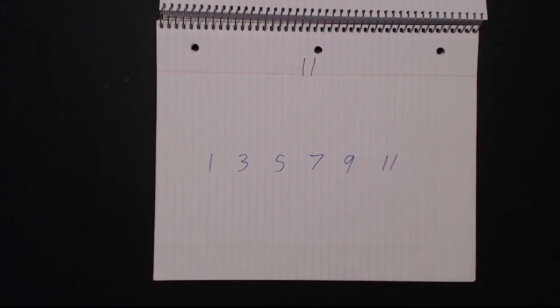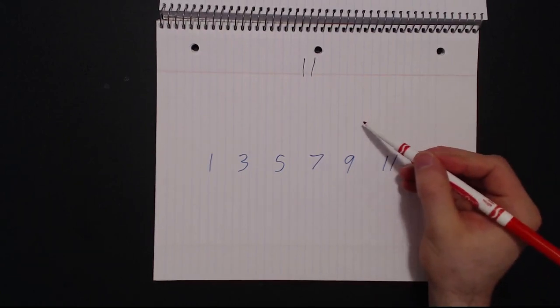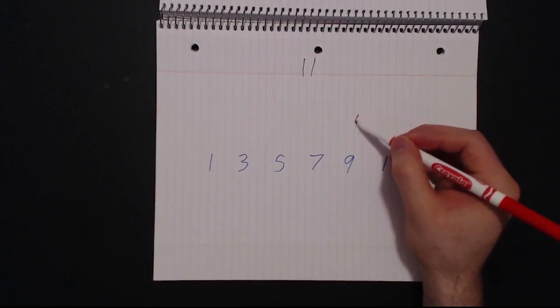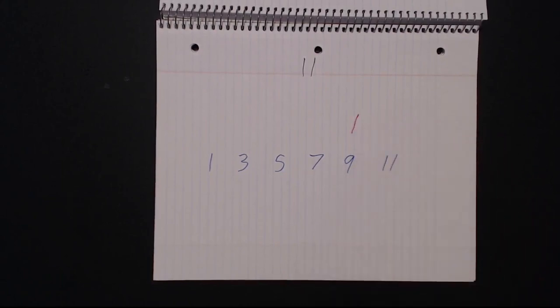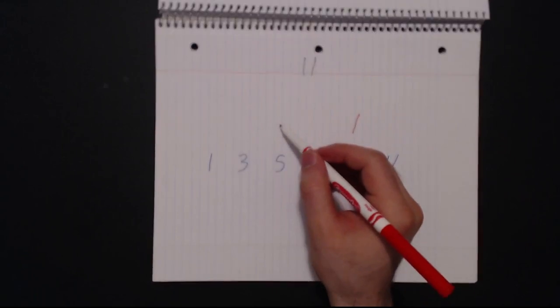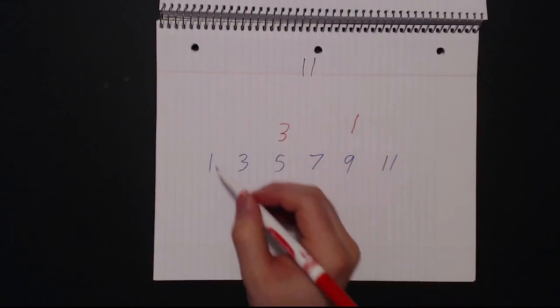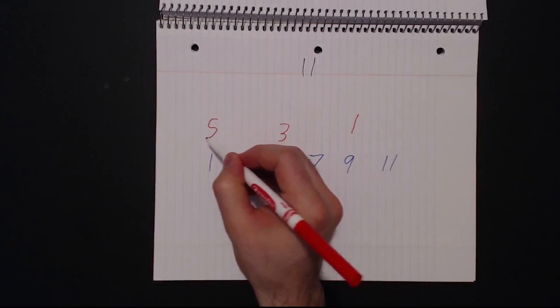Now we're going to have to count the odd numbers from 1 to 11 but in reverse, skipping every other number. So if we skip the first number 11, we start with 9, 1. Next we skip over the 7 and go straight to 5, 3. Next we skip over 3 and we go to 1, 5.